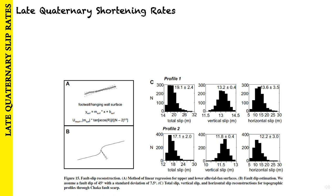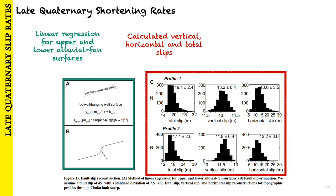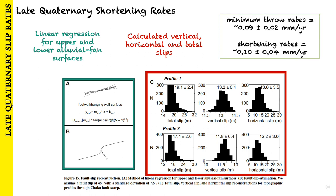They reconstructed fault slip by fitting linear regressions to the topographic survey data from the QF2 surfaces and projecting these surfaces to their intersection with the planar fault. This provided minimum throw rates across the fault of 0.09 plus or minus 0.02 mm per year and shortening rates of around 0.10 plus or minus 0.04 mm per year.